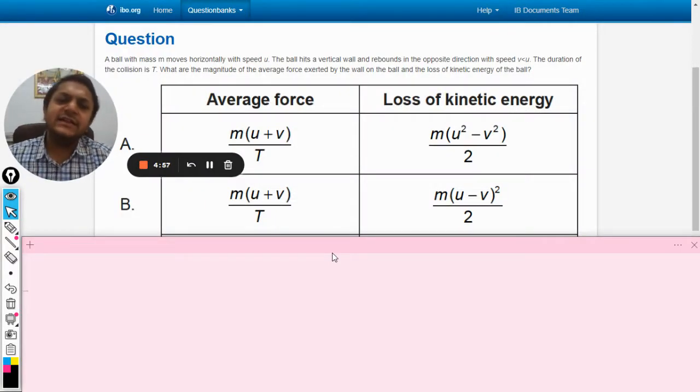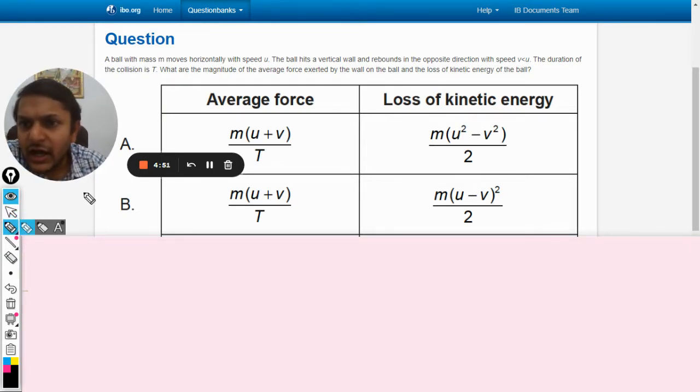Okay dear students, let us see this question. There is very less space to write here, so that is why I have created a space here. Now the question is: a ball with mass m moves horizontally with speed u.